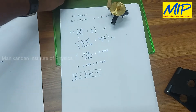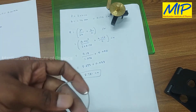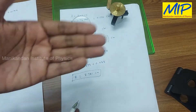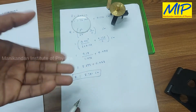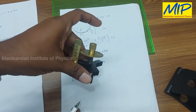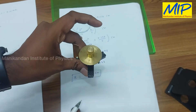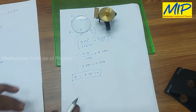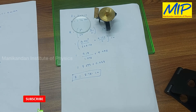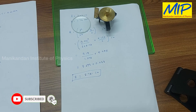Not only for the convex lens, we can use the spherometer to find the radius of curvature for a concave lens, a concave mirror, or a convex mirror — any spherical surface. If you like this video, share it with your friends and subscribe to our channel to get regular updates. Thanks for watching.